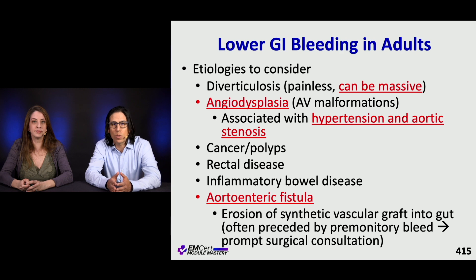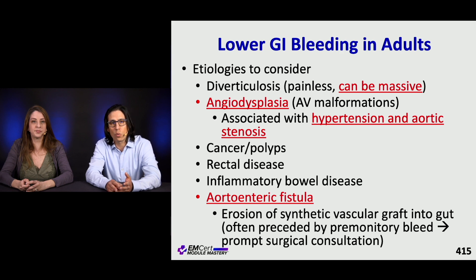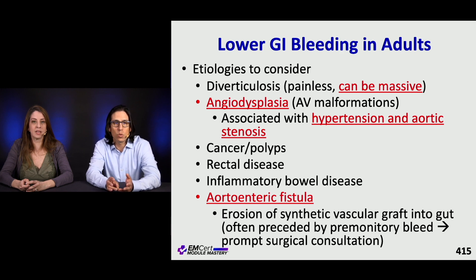Angiodysplasia is associated with hypertension and aortic stenosis. It's also associated with people who have left ventricular assist devices, LVADs. Maybe one of the most feared is an aortoenteric fistula. If you've had prior aortic surgery, you have erosion of a graft or a repair into your gut, there can be a sentinel bleed. But when this really opens up, it's really bad, and this merits prompt surgical consultation.